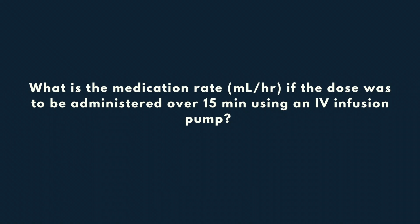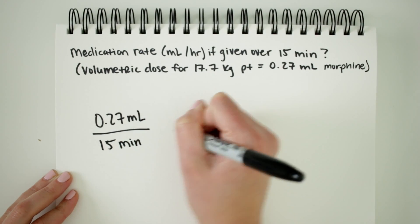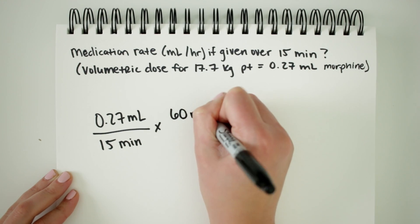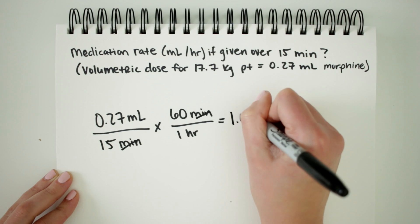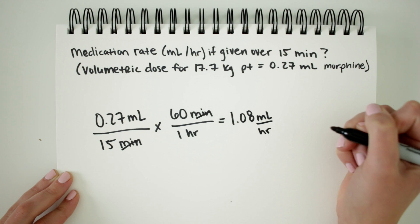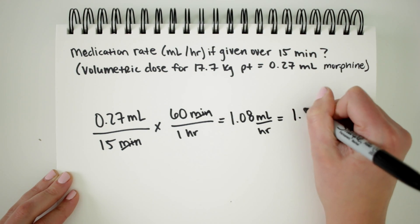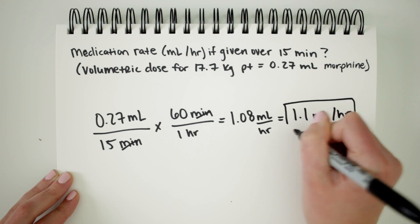For the next two examples, we're going to pretend we would give this medication over an IV pump, which in reality is probably how we would administer a dose of morphine. This first example is asking us what the hourly infusion rate would be if we wanted to give this dose over 15 minutes. By finding this information, we can program the IV pump with a set hourly rate that will infuse our entire dose at a constant rate until complete. We know the volumetric amount of the dose is 0.27 milliliters, to be infused over 15 minutes. We set up conversion factors, make sure all units cancel, and the medication would need to be set at an hourly infusion rate of 1.1 milliliters per hour.